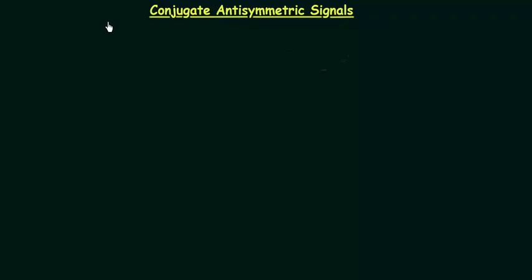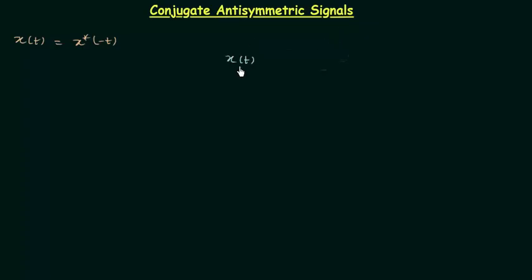In the last lecture we completed conjugate symmetric signals. The condition for conjugate symmetry is x(t) = x*(−t), where x*(−t) is the complex conjugate of the signal x(−t). In this lecture we will study conjugate antisymmetric signals, and the condition for conjugate antisymmetry is x(t) = −x*(−t).